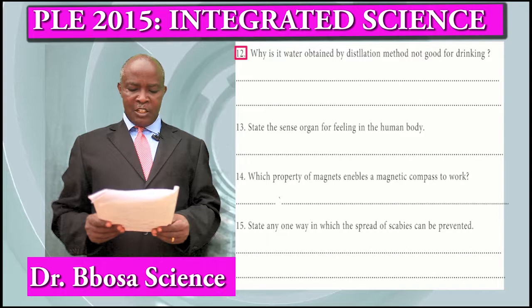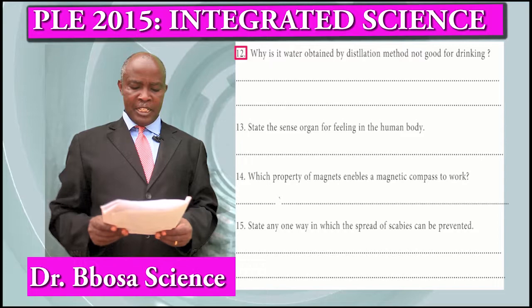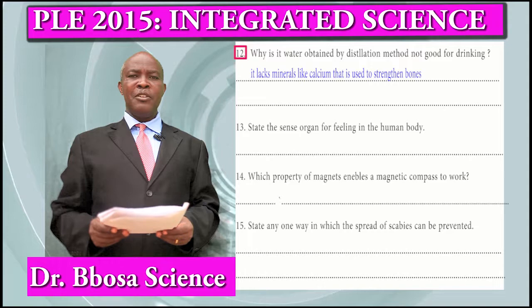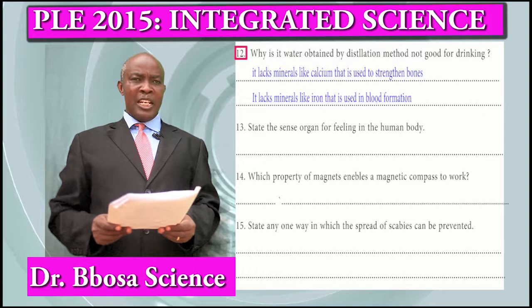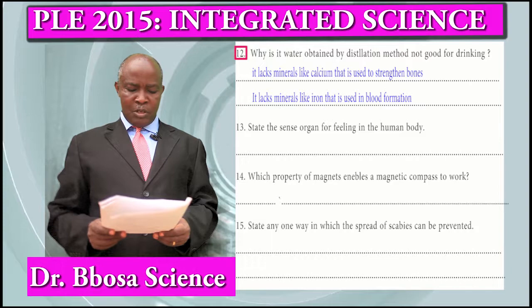Question 12: Why is water obtained by distillation method not good for drinking? It lacks minerals like calcium that strengthens bones. It lacks minerals like iron which is used in blood preparation.